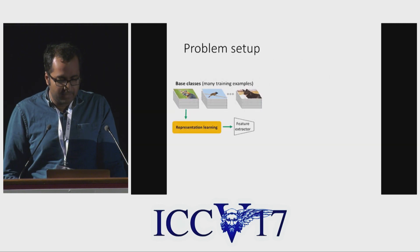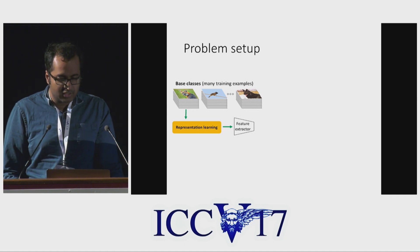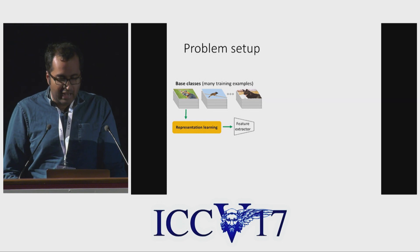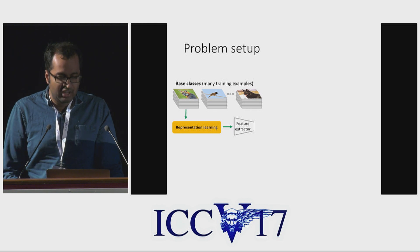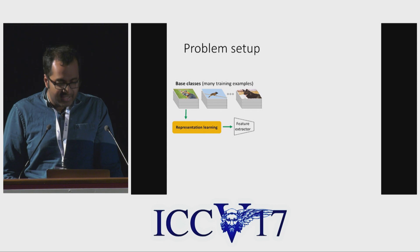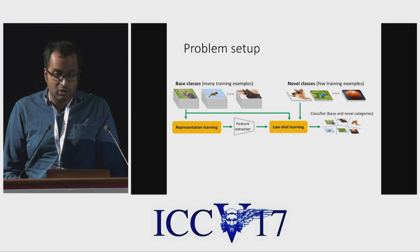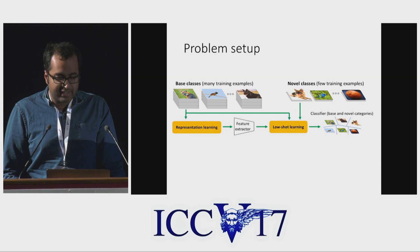Our problem setup is based on challenges faced in real-world applications of visual recognition. First, a convolutional network-based feature extractor is trained on a large dataset consisting of thousands of classes with thousands of examples each — we call these base classes. Next, the recognition system is deployed and encounters several novel classes which have very few training examples. The task is to learn a new classifier that can distinguish among both the novel and the base classes.